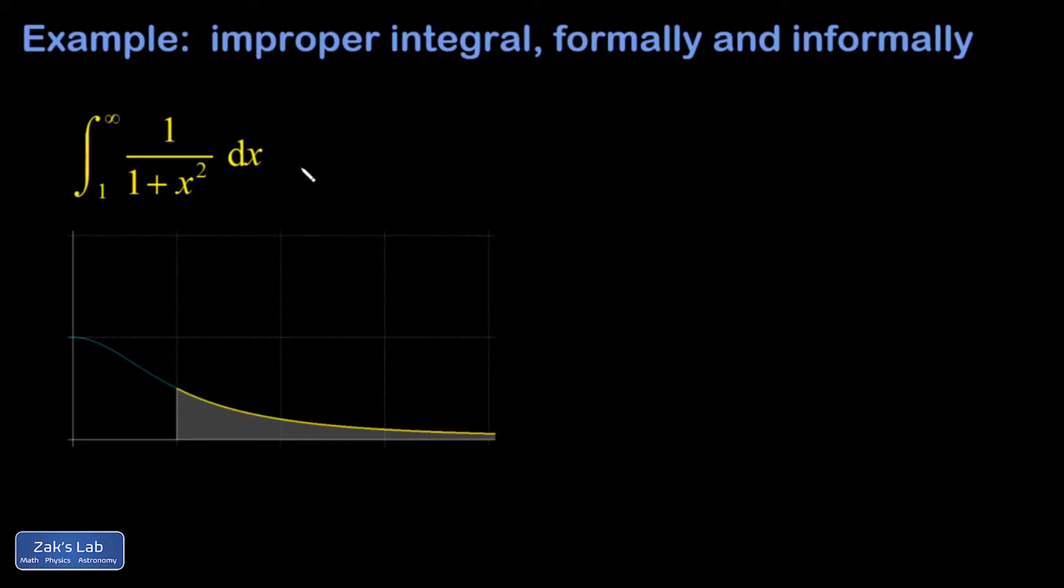I'm going to do the informal approach first. What I mean by that is we're treating infinity like a number even though we know it's kind of a limit and not a number. So my informal approach: I guess the antiderivative—well this is just an inverse tangent—and then I evaluate across the limits of integration.